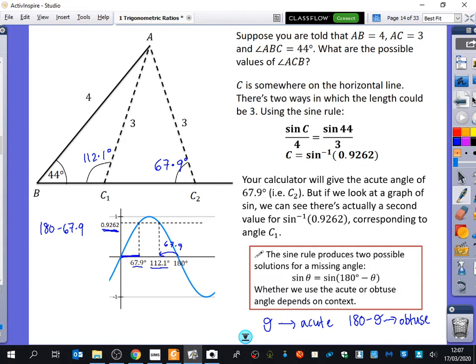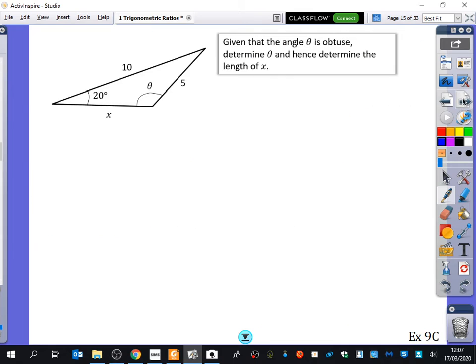So I'm going to have a look at this question together that's on the next page now. Given that the angle theta is obtuse, determine theta and hence determine the length of x. So we've got a double whammy kind of question that's going on here. We first of all want to find out what theta is. Then we want to find out what x is. So to find theta, what kind of rule does it look like we'll use to find theta? The cosine or the sine rule?